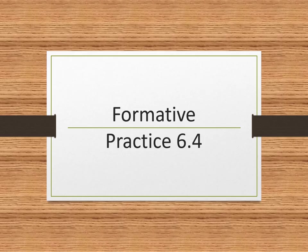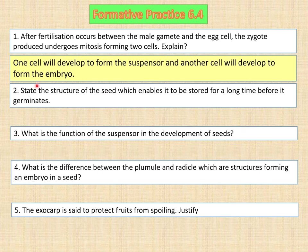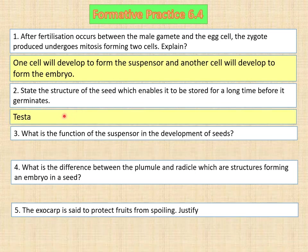Practice 6.4. Question one: After fertilization between the male gametes and the egg cells, the zygote undergoes mitosis forming two cells. The answer is: one cell will develop to form the suspensor and another cell will develop to form the embryo. Question two: State the structure of the seed which enables it to be stored for a long time before it germinates. The answer is the testa — the seed coat derived from the outer integuments of the ovule, which becomes the testa upon maturity.